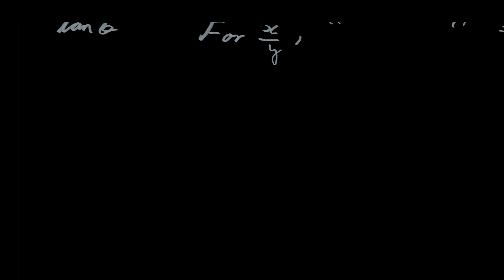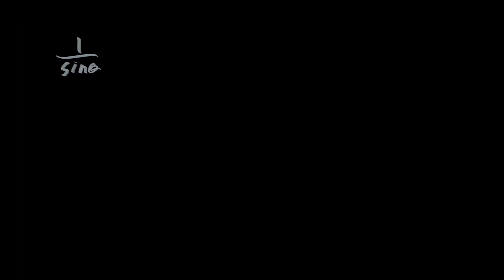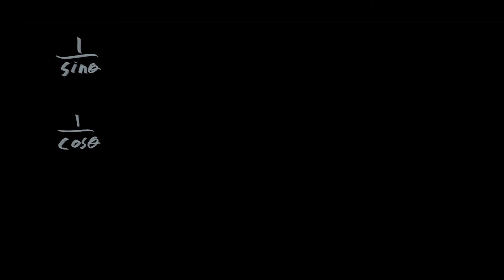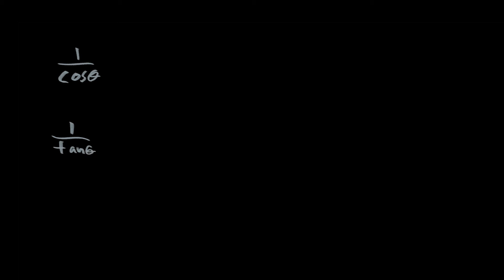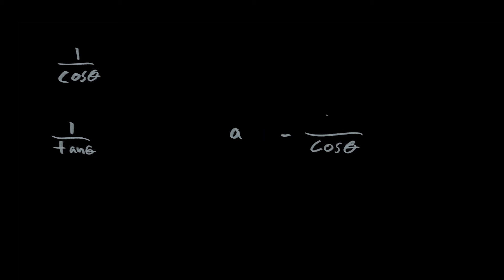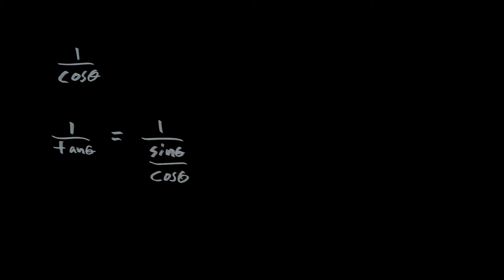The reciprocal of sine of theta would be 1 over sine of theta. The reciprocal of cosine of theta would be 1 over cosine of theta. Now remember, tan of theta is equal to sine of theta over cosine of theta, so 1 over tan of theta would be 1 over the quantity sine of theta over cosine of theta.